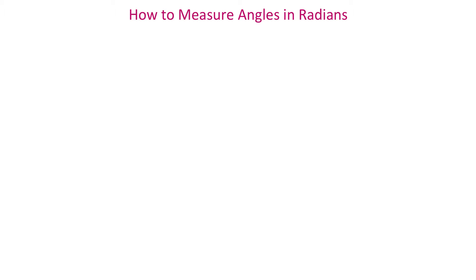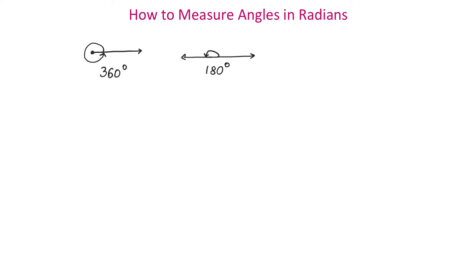In this video we will see how to measure angles in radians. We know that one common unit of measuring angles is degrees. If we have a ray, then one full rotation of this ray back unto itself forms a 360 degree angle. Half of a rotation forms a 180 degree angle, and one fourth of a rotation forms a 90 degree angle.